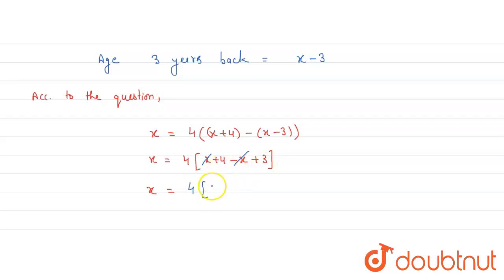And inside the bracket, four plus three is seven, so x is equal to four times seven equals twenty-eight.